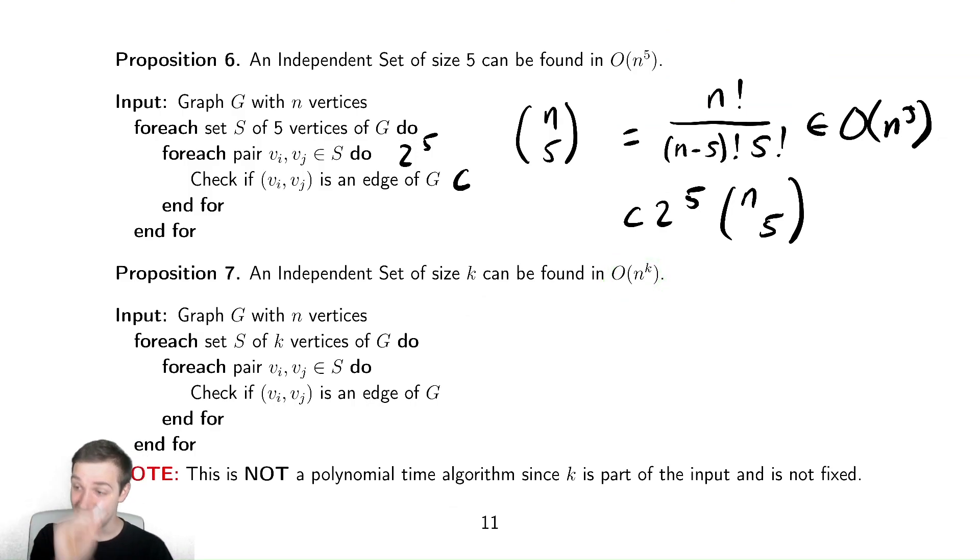So this is not a polynomial time algorithm. It would be polynomial time if you fixed the size of the independent set, but we are not fixing that size. This is worth mentioning: this is not a polynomial time solution because the size of the independent set is part of the input.